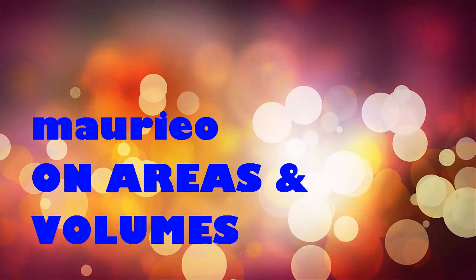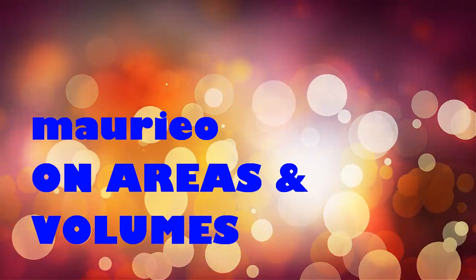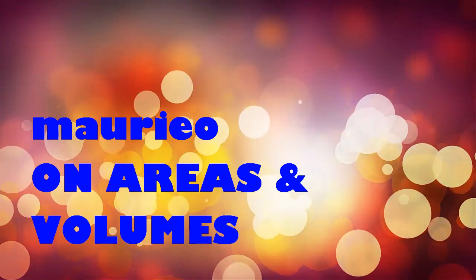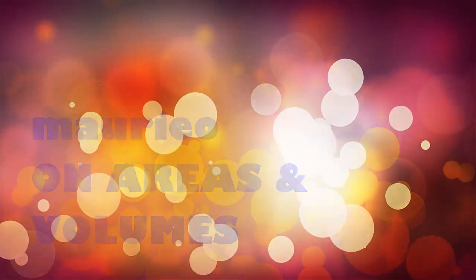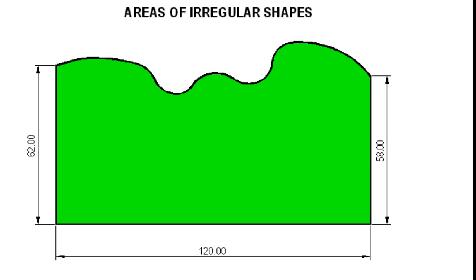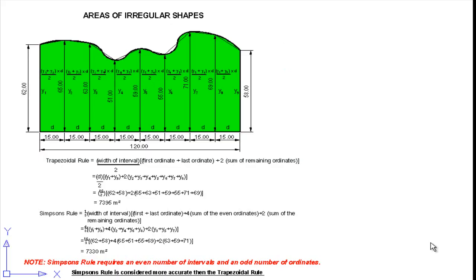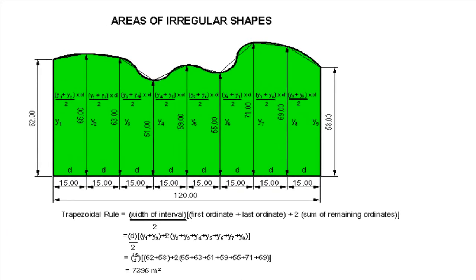In this video we're going to be looking at working out the areas and volumes of irregular shapes and solids. To start with, we have an irregular area or shape and we're going to work out its area. What we need to do is divide the area up into equal intervals. It's best if you have an even number of intervals — in this case, 8 — and that will give us an odd number of ordinates: y1 through y9.